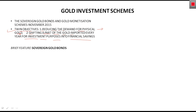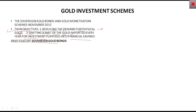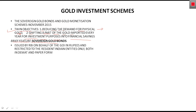Now, the brief features of the Sovereign Gold Bond. The first point is that it is issued by the RBI on behalf of the Government of India. So this is a bond, and only the RBI can issue it on behalf of the Government of India.